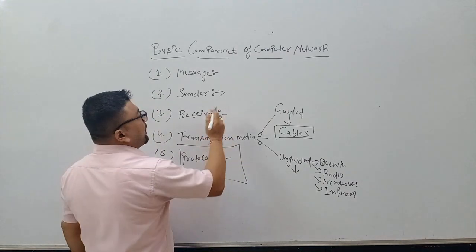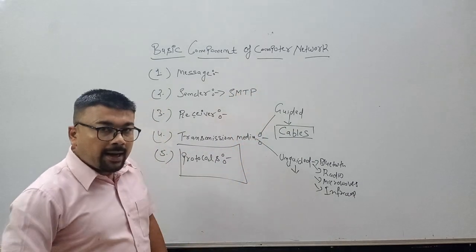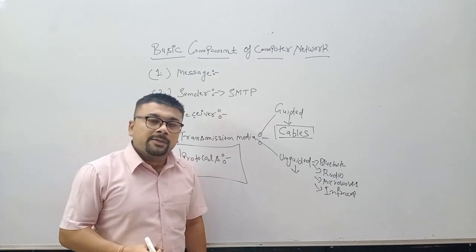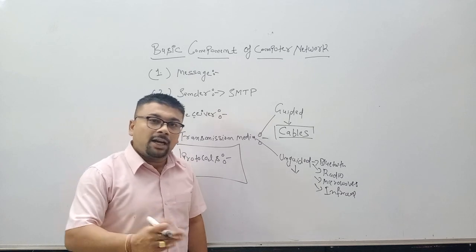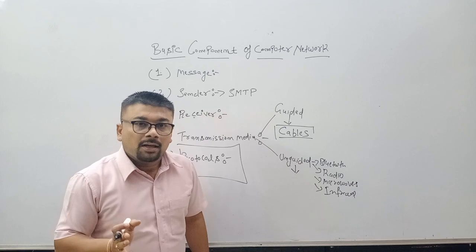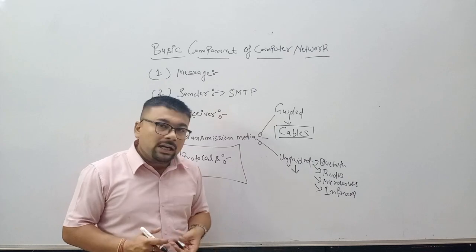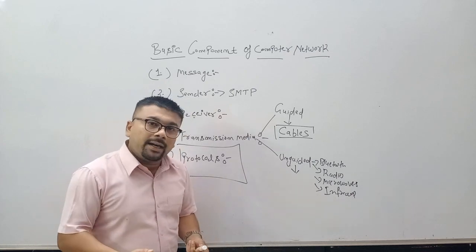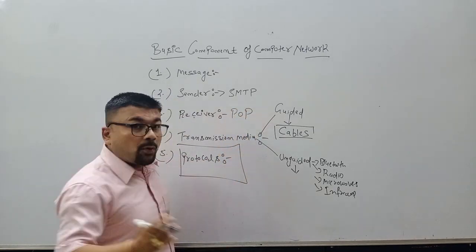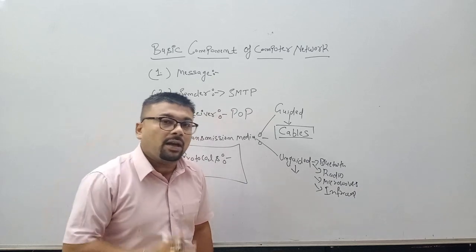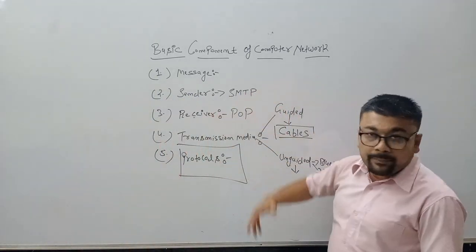One protocol name is SMTP — Simple Mail Transfer Protocol. This protocol is very important for the sending purpose; it may be a text, an email, or whatever. If this protocol is not enabled in your system, you cannot send any message, text, or mail. On the receiver side, there is POP — Post Office Protocol — used at the receiving end. This is all about the basic components of a computer network. Thank you so much.